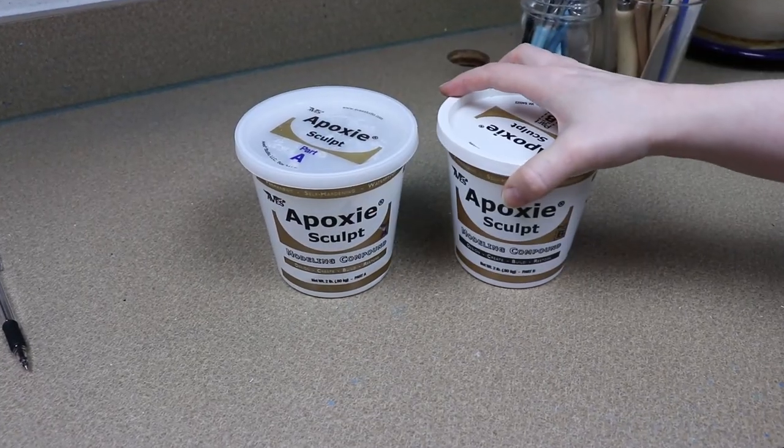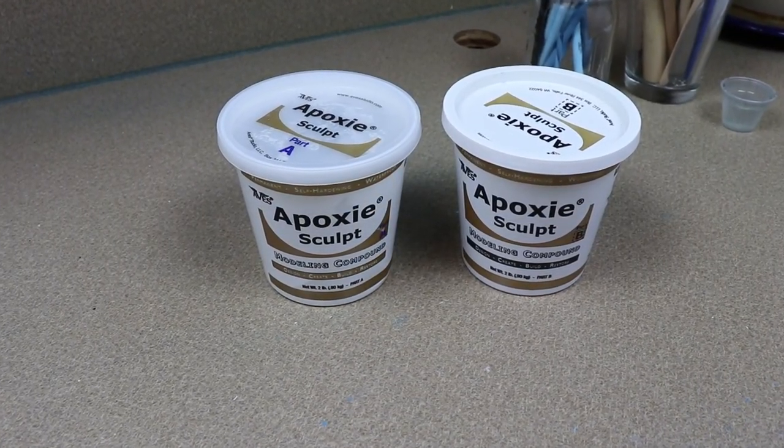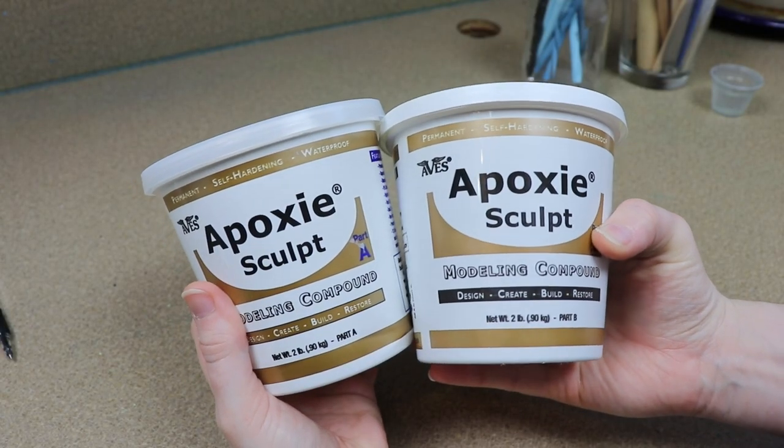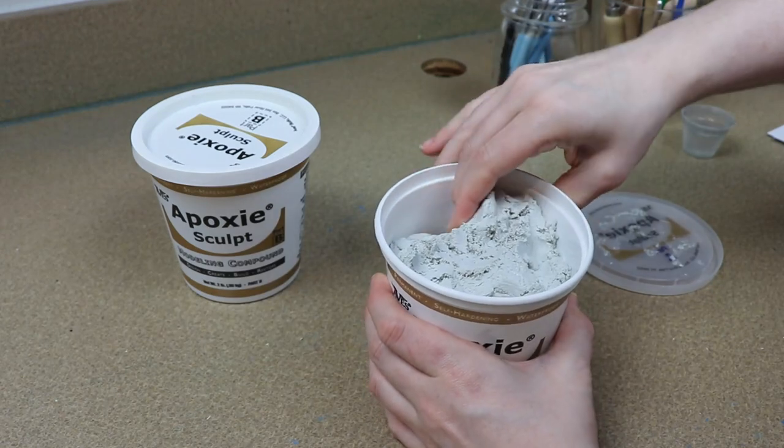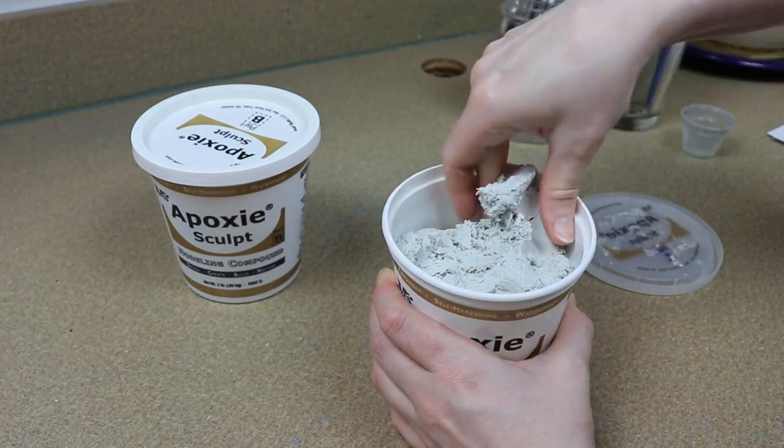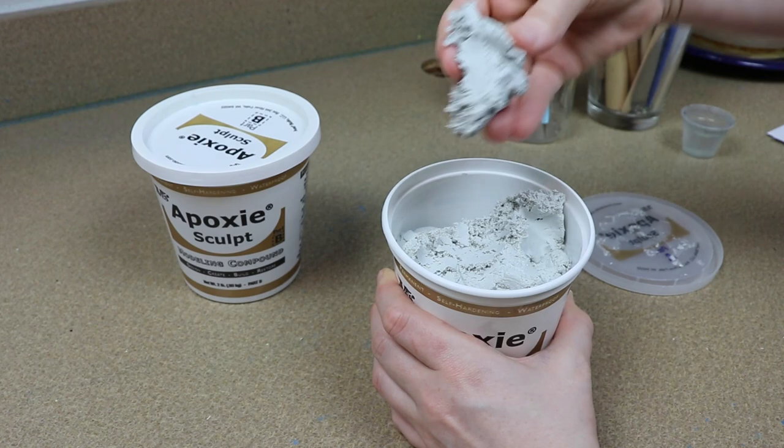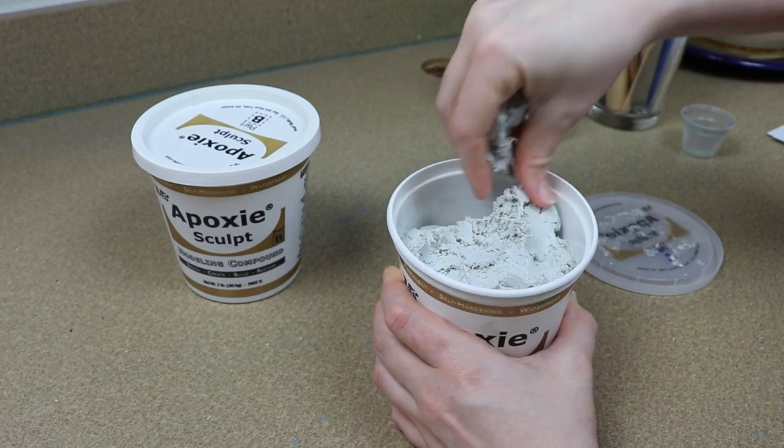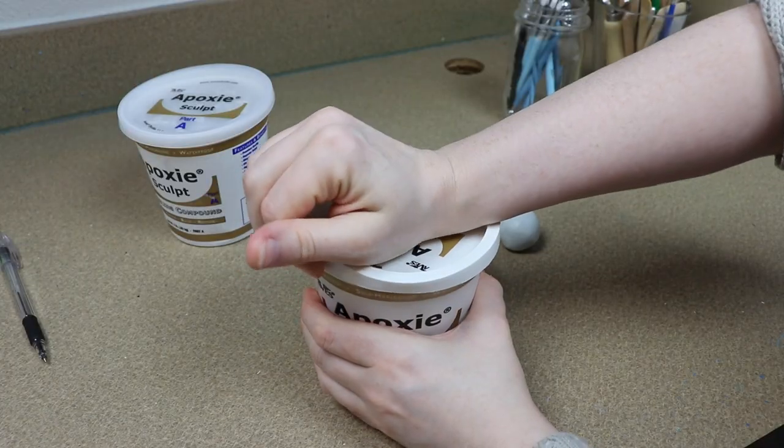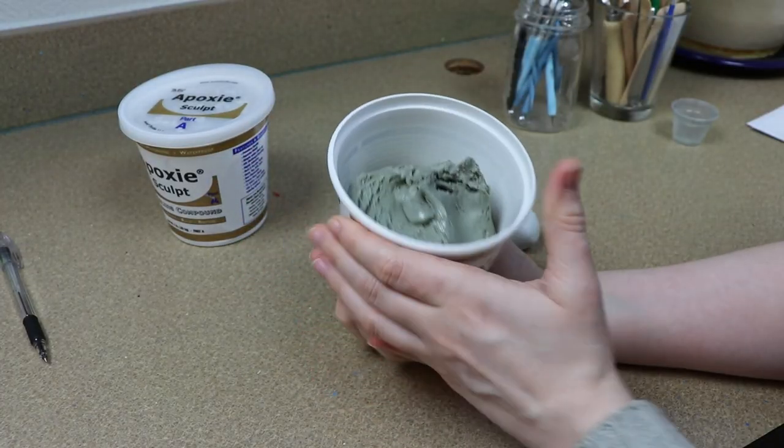Okay, so the type of clay that I'm using for this project is called epoxy sculpt. It's basically resin in clay form so when you're done it will cure and it'll be just as hard as resin so it's super strong and that's the main reason I'm going to be using it to make my antlers because I want them to be extremely strong and I don't want to have to worry about them breaking.